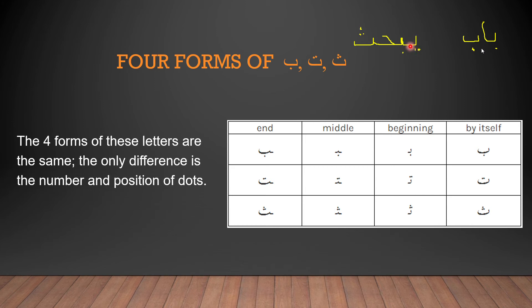A word here takes the connecting line and has to join with the next letter. The ending Ba is very similar to the standalone original form of Ba. As I mentioned, the ending version of some letters will be the same as the original form.